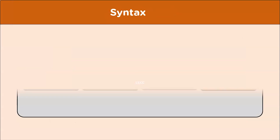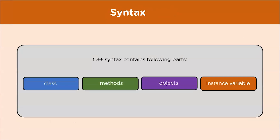Now let's look at the syntax of C++. First is the class — it can be defined as a blueprint that describes the behavior of objects, or we can say a class is a collection of objects. A class is defined with the keyword 'class' and has its own members called member functions or methods, variables, constructors, etc.